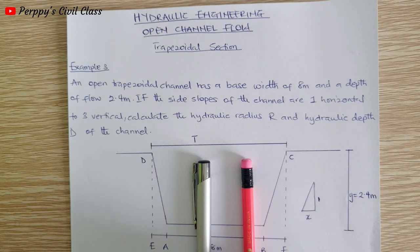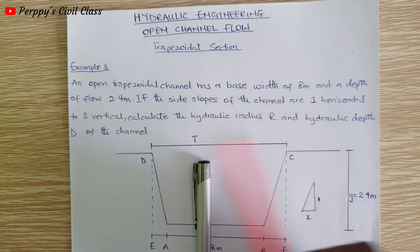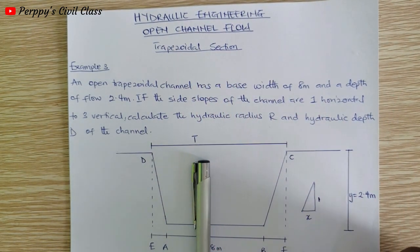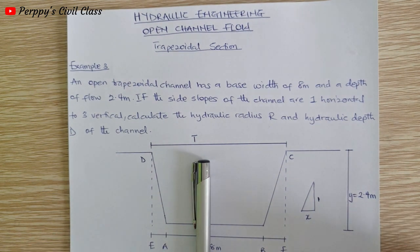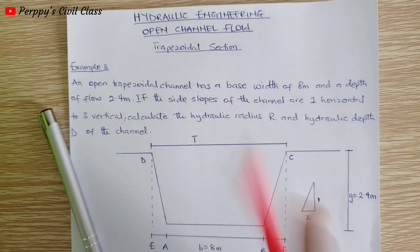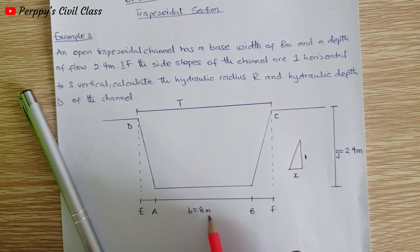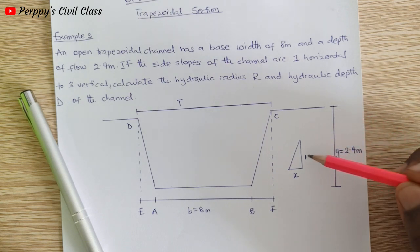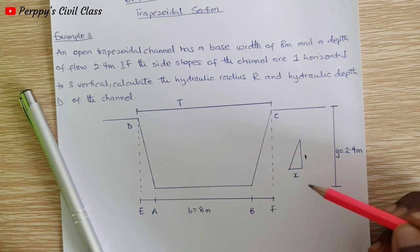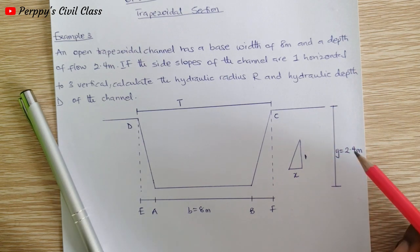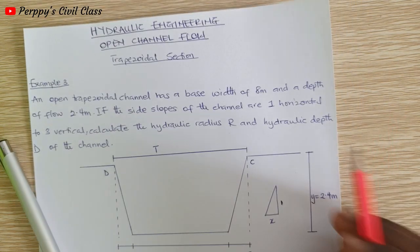Hello, good day everyone. Today we are going to look at the hydraulic radius and the hydraulic depth of a trapezoidal section in open channel flow. The question states: an open trapezoidal channel has a base width of eight meters, a depth of flow of 2.4 meters, and a side slope of one horizontal to three vertical. We need to calculate the hydraulic radius and the hydraulic depth of the channel.